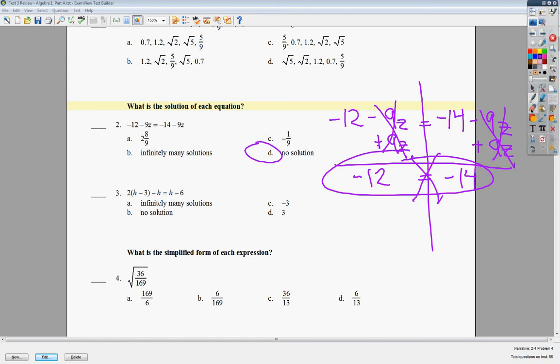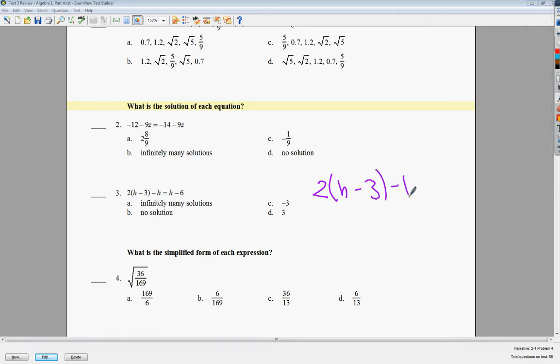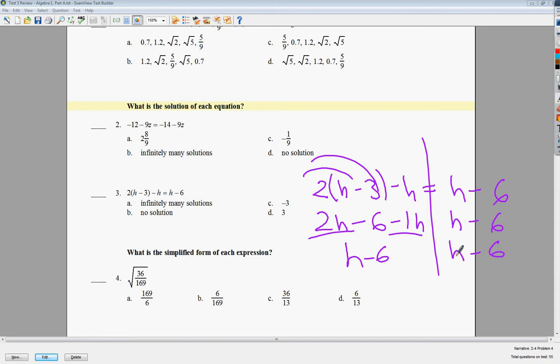For the next one, same type of problem. And I'm going to distribute 2 times h, 2 times negative 3 is negative 6. Minus 1h, and h minus 6. Now, my like terms are here. I need to put those together. 2 minus 1 is, of course, 1. So, I end up with h minus 6 and h minus 6. I need to get rid of plus 1h over here. So, I'm going to subtract an h. If I do it from over here, they cancel out. So, my answer is negative 6 is equal to negative 6. There's no variable there because I've eliminated it. This statement is true. Yeah, negative 6 is equal to negative 6. So, I can say that the answer to number 3 is infinitely many solutions.